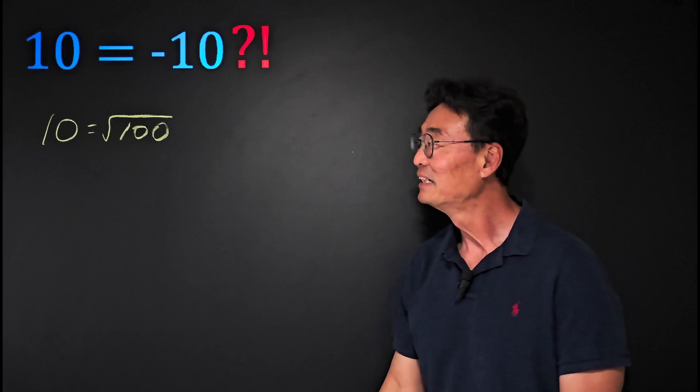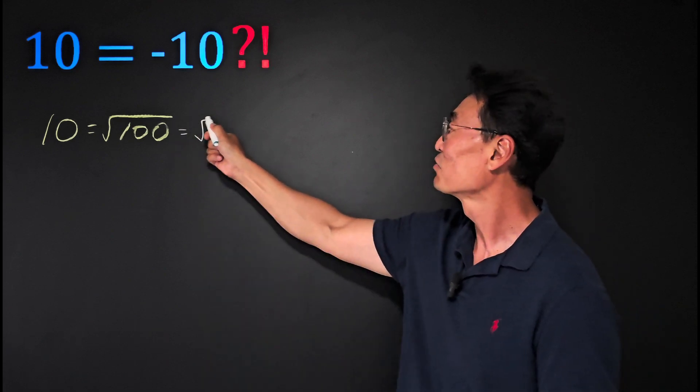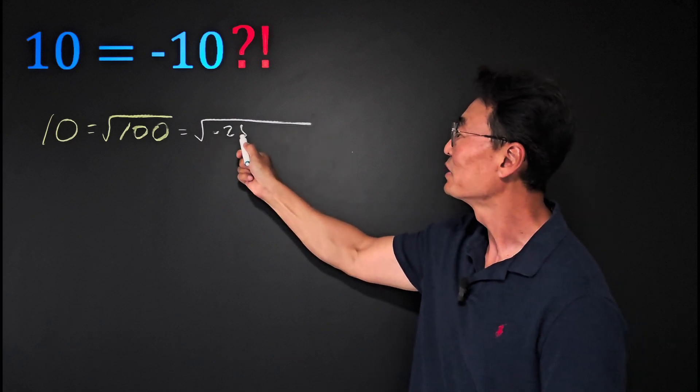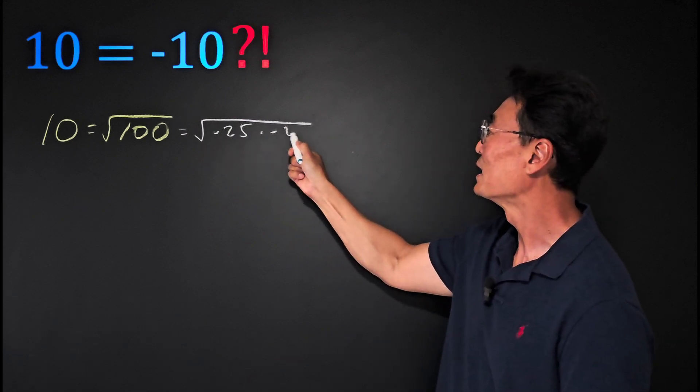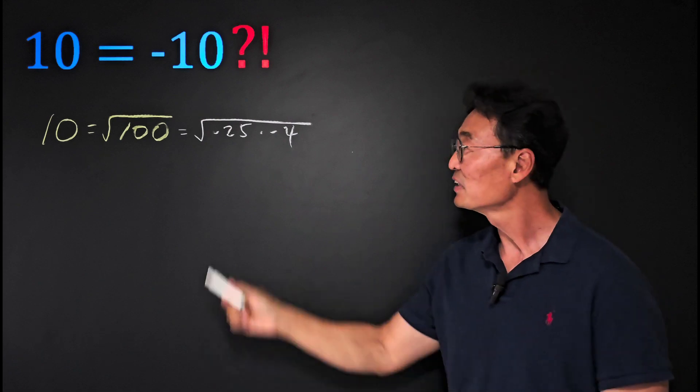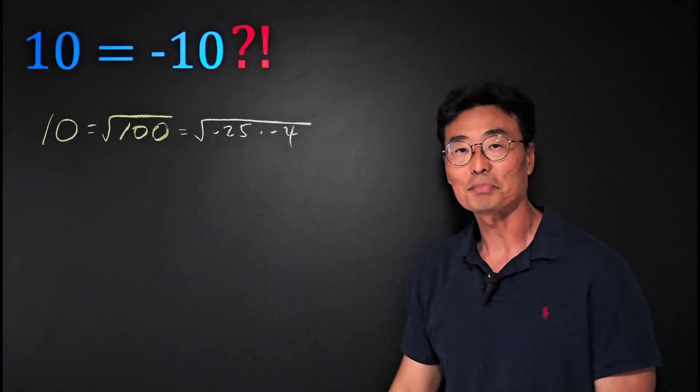So far so good, I hope. Then I'm going to change that square root of 100 into square root of negative 25 times negative 4, since negative 25 times negative 4 is positive 100.